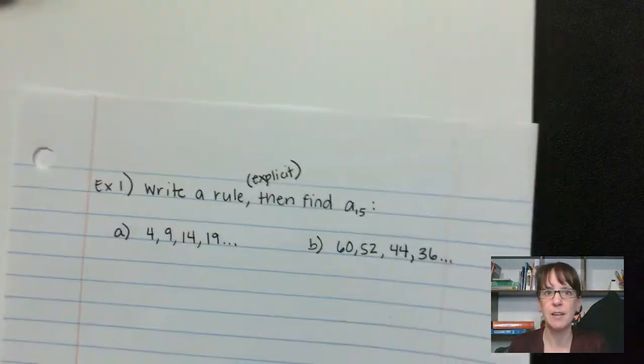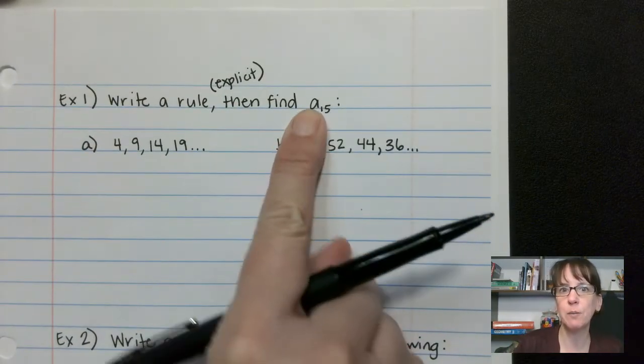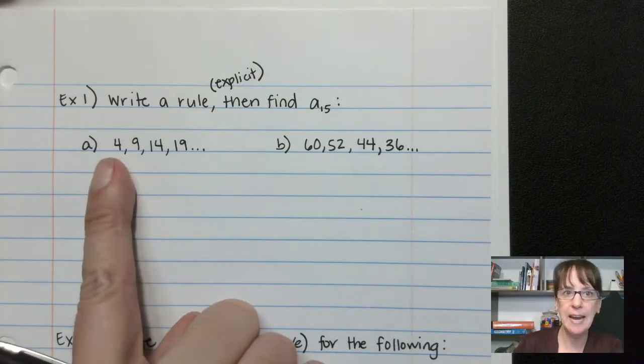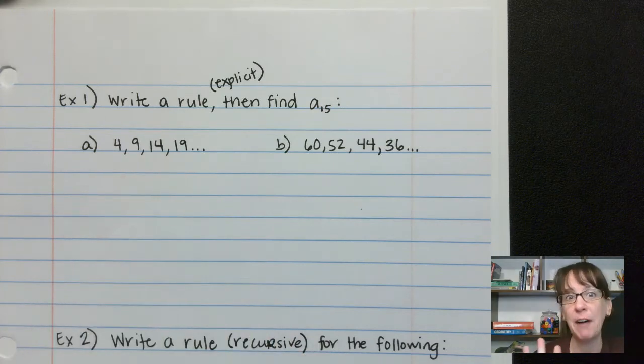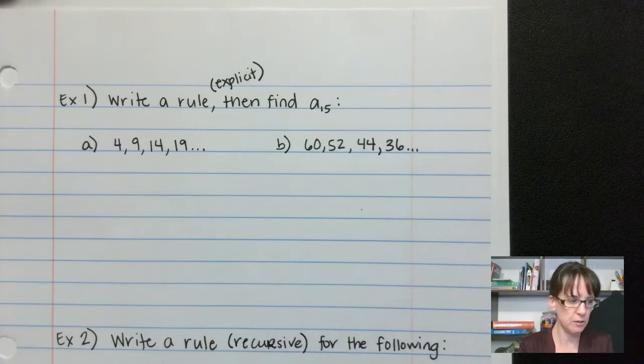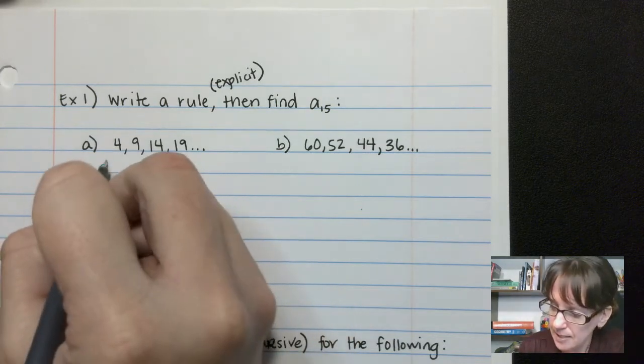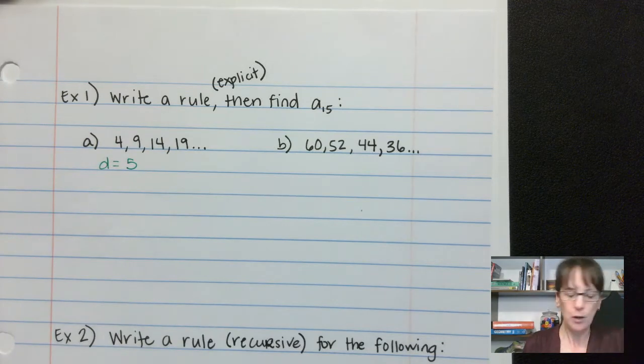Okay. So let's try it with this other example here. We've got—we're going to write an explicit rule and then we're going to find what is term 15 or position 15 for this guy. Okay. So looking at a, we have 4, 9, 14. Okay, so it looks like we're adding 5 to each of those. That means our common difference is 5. You know what? I'm going to use different colors so you can see. So we know that our common difference is 5, d equals 5.